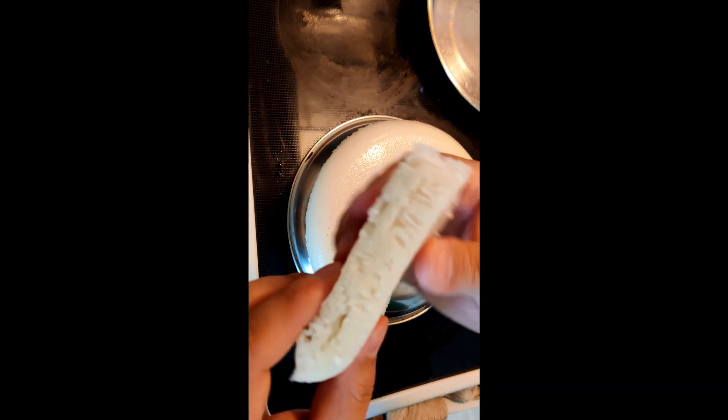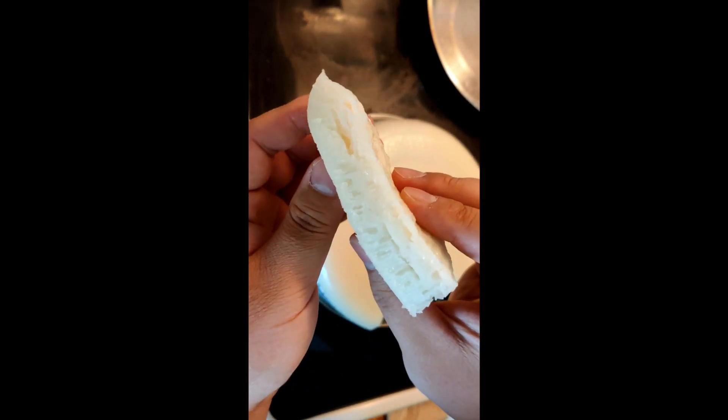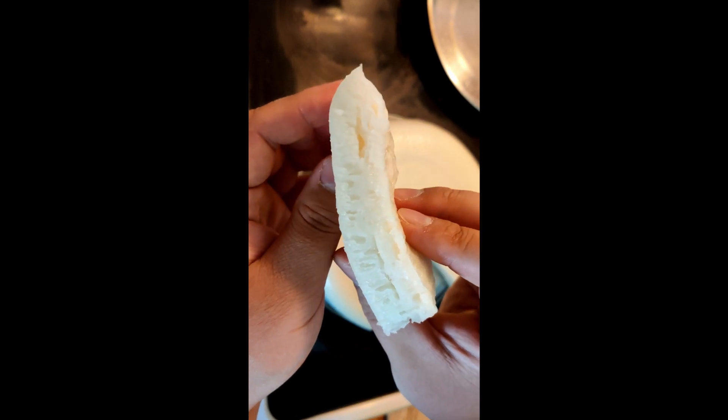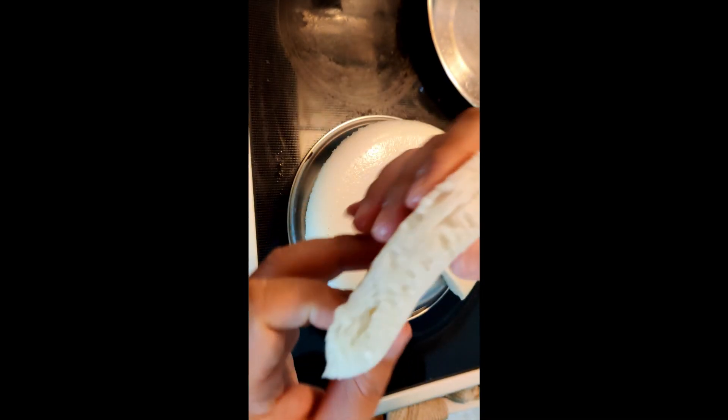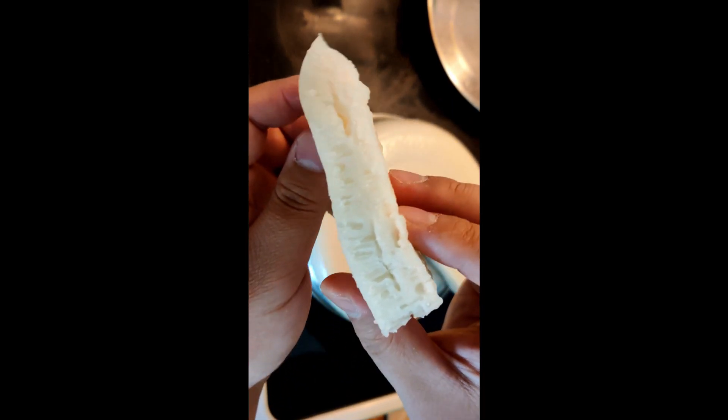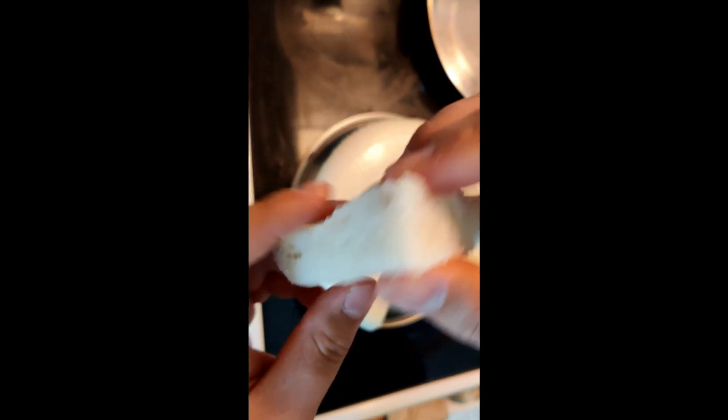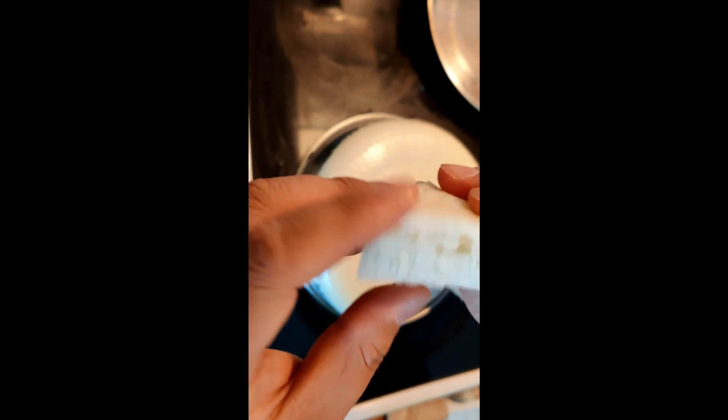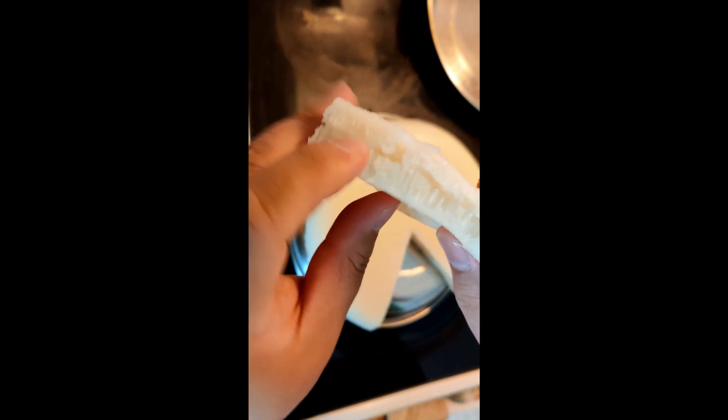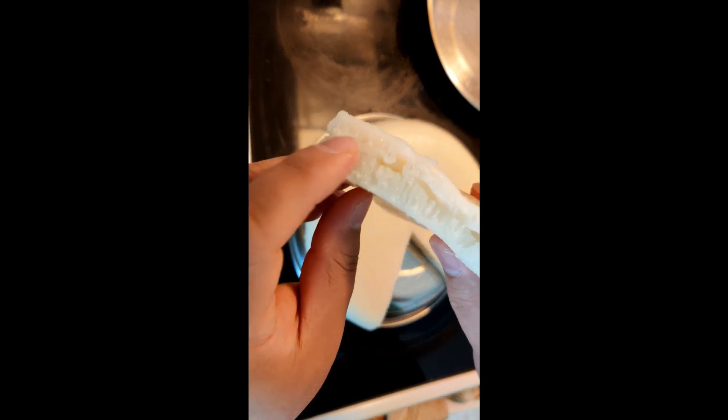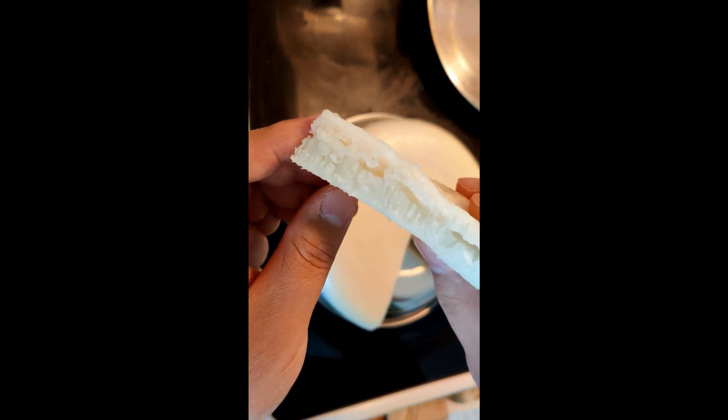So this is white sugar cake or bak tong go. So this is an authentic Cantonese dim sum. You can get this. See how it's spongy and the air pockets? That's the effect from the dry yeast and baking powder.